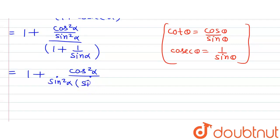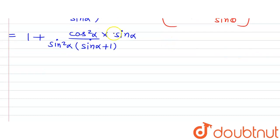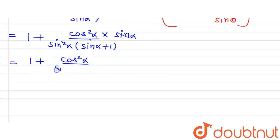So in the numerator we have (sin²α + cos²α)/sin²α, and (sinα + 1)/sinα in the denominator. The sinα from the denominator goes to the numerator, and one sinα cancels with sin²α, leaving us with (1 + cos²α) divided by sinα(sinα + 1).